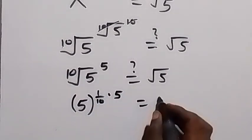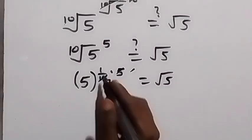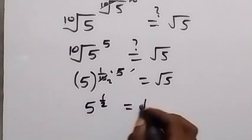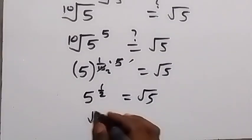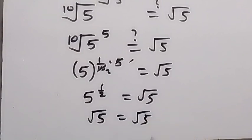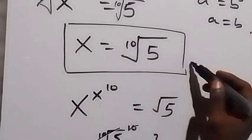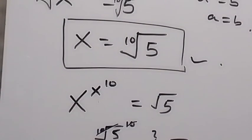We can write the 10th root of 5 as 5 raised to the power one-tenth, then multiplied by 5 — this equals root 5. We have the exponents: one-tenth times 5 gives one-half, so this is 5 raised to the power one-half. Since 5 raised to power half equals root 5, the left-hand side equals the right-hand side. Therefore x equals the 10th root of 5. Thank you for watching, please share this video and subscribe to my channel.